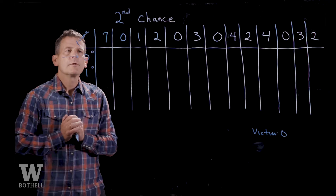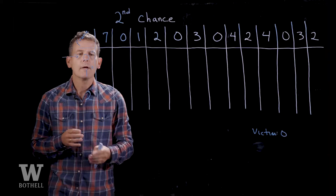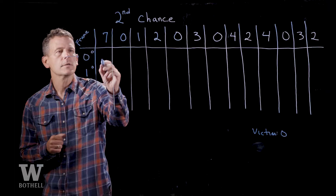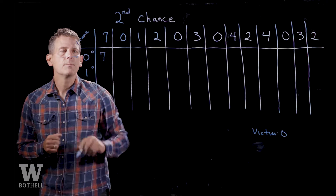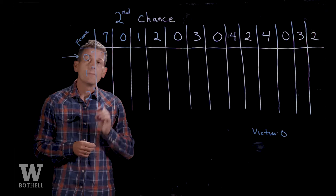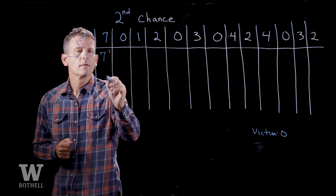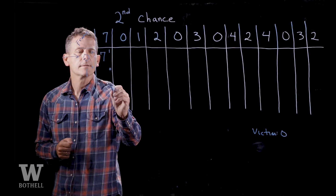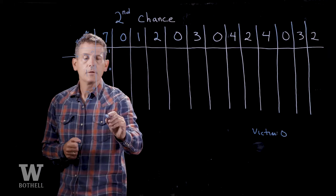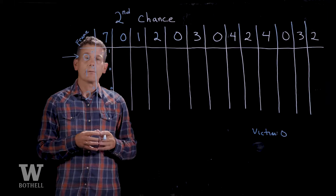We're going to reference virtual page number seven. Right now nothing is in physical memory, so we can go ahead and take frame zero and put page seven into frame zero. Because we've touched that page, the reference bit will be set to one. The other two reference bits are still at zero. We'll call that a page fault because it was not in physical memory.